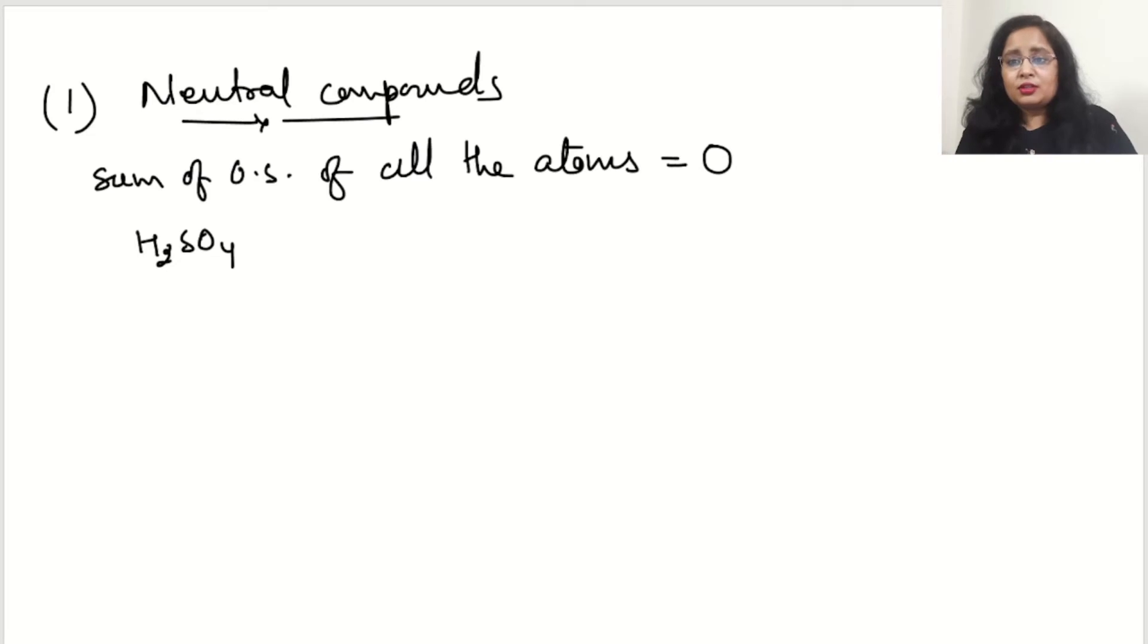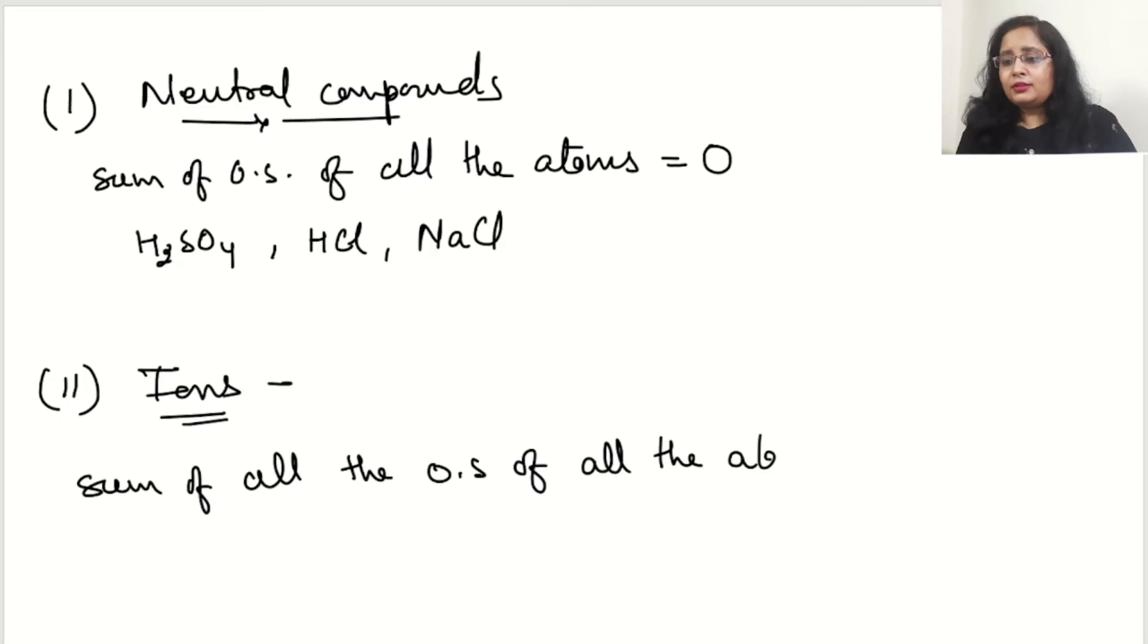The second formula which will be used only for ions, that will be sum of all the oxidation state of all the atoms. It should be the charge on the species. Species means either it will be cation or anion. The charge on that species, that will be the sum of the total oxidation state.